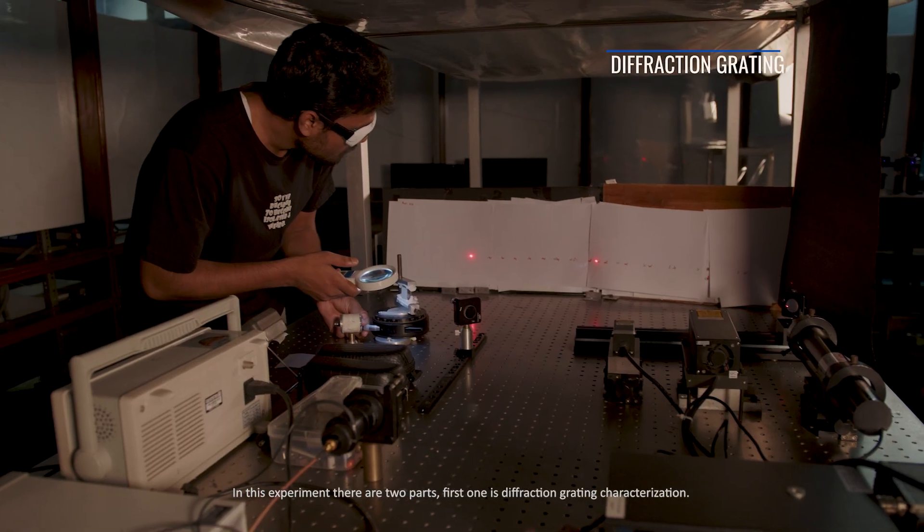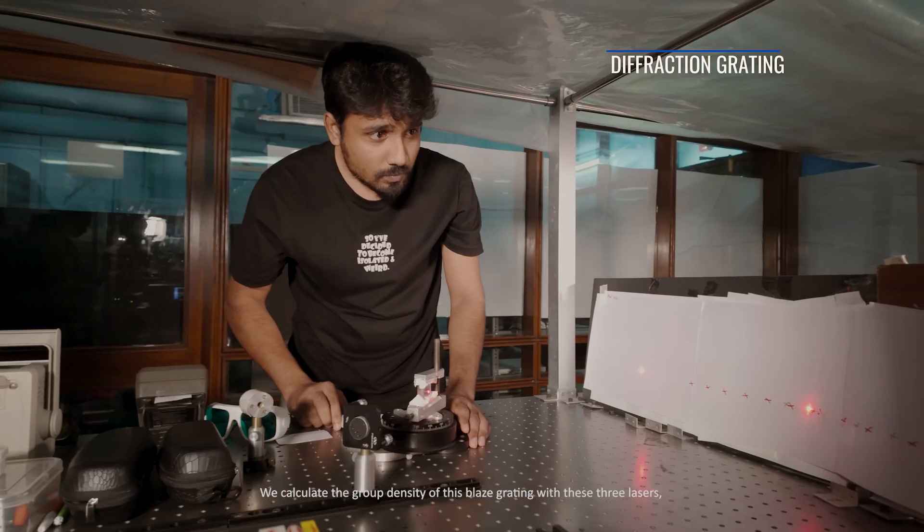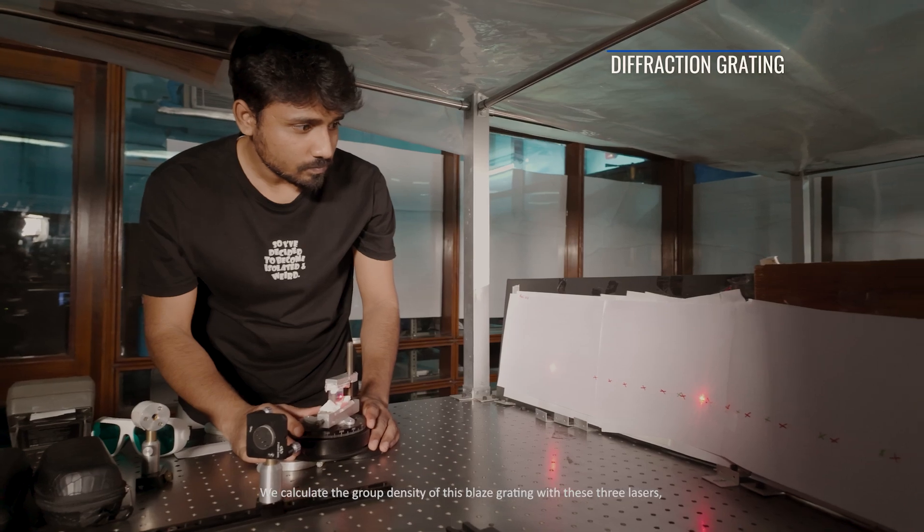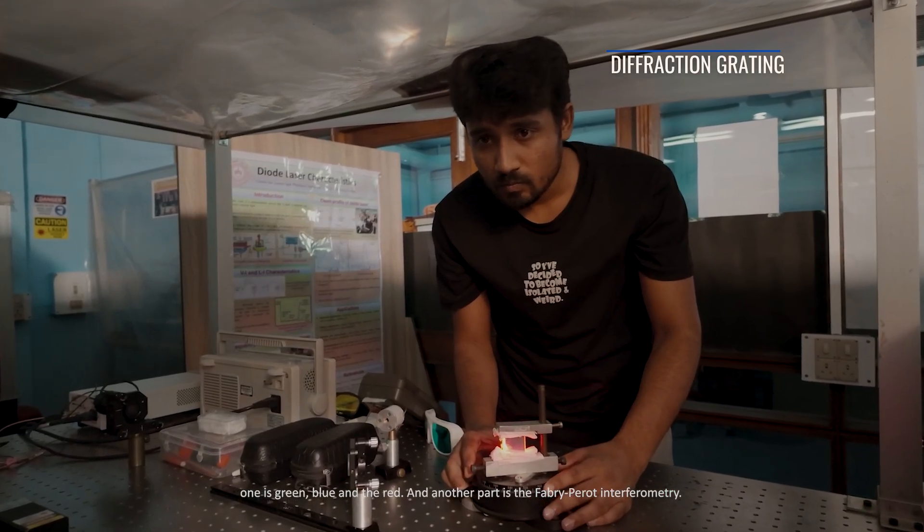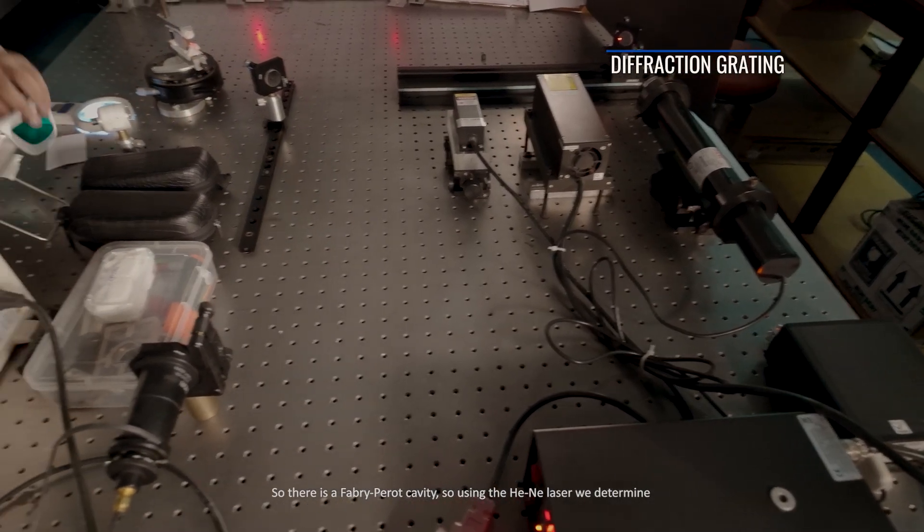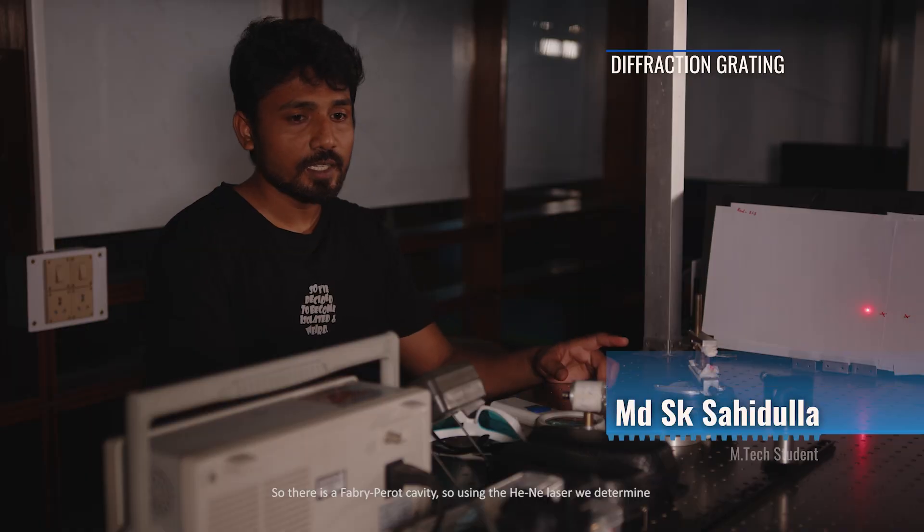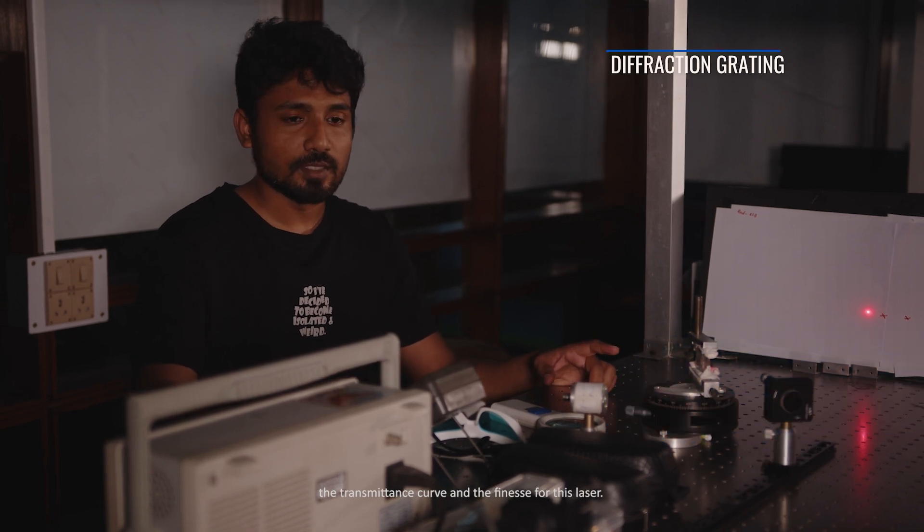In this experiment there are two parts. First one is diffraction grating characterization. We calculate the groove density of this blaze grating with three lasers: green, blue, and red. Another part is Fabry-Perot interferometry. There is a Fabry-Perot cavity. Using the helium-neon laser we determine the transmittance curve and the finesse for this laser.